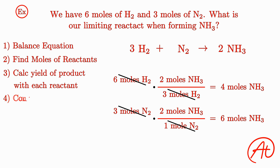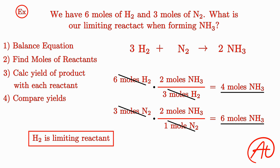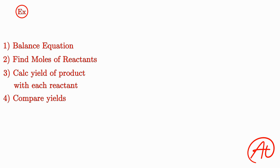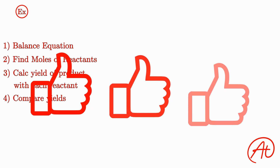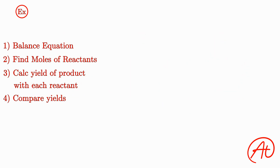Finally, we want to compare our theoretical yields for each reactant. With the amount of hydrogen we have, we could only theoretically make 4 moles of ammonia, whereas with nitrogen we could make 6 moles. So hydrogen is our limiting reactant, because that's what we will run out of first and cause our reaction to stop. Now let's solidify this concept with a more challenging example. But first, if you're finding this video useful, please consider hitting those like and subscribe buttons to support us making more of these videos.